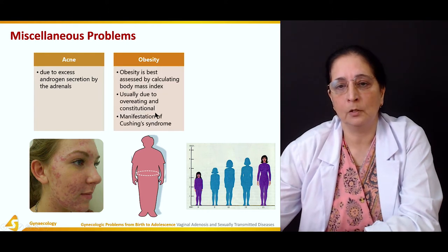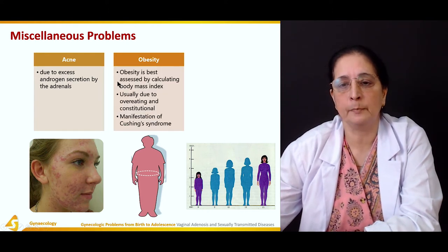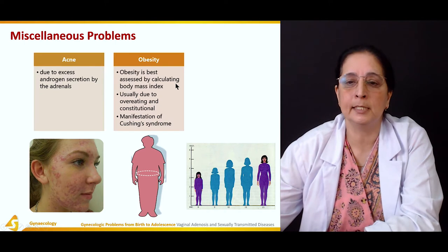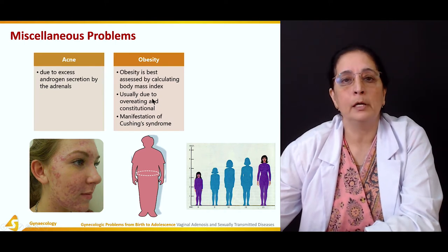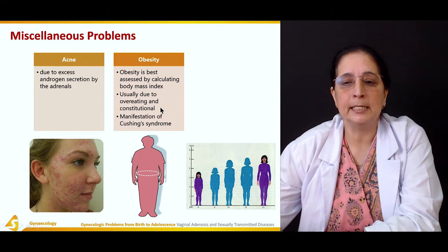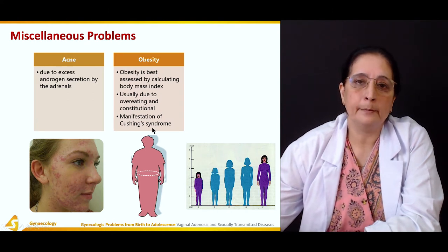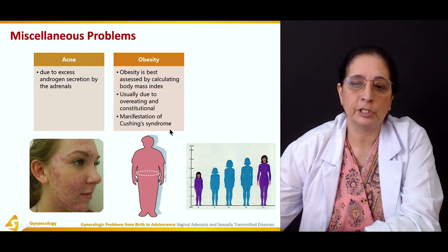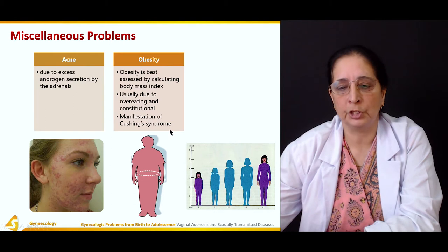Obesity is best assessed by calculating the body mass index (BMI). It is usually due to overeating and constitutional factors, and it can be a manifestation of Cushing syndrome.